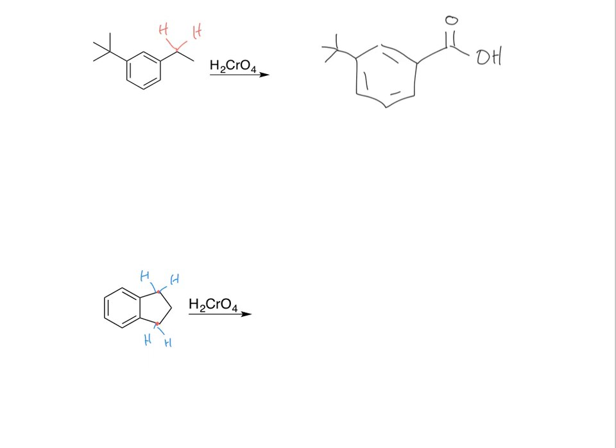So now we draw our benzene ring. And remember, no matter what that group looked like before, that benzylic carbon is going to get turned into a carboxylic acid. So that becomes a carboxylic acid. And the bottom one becomes a carboxylic acid.